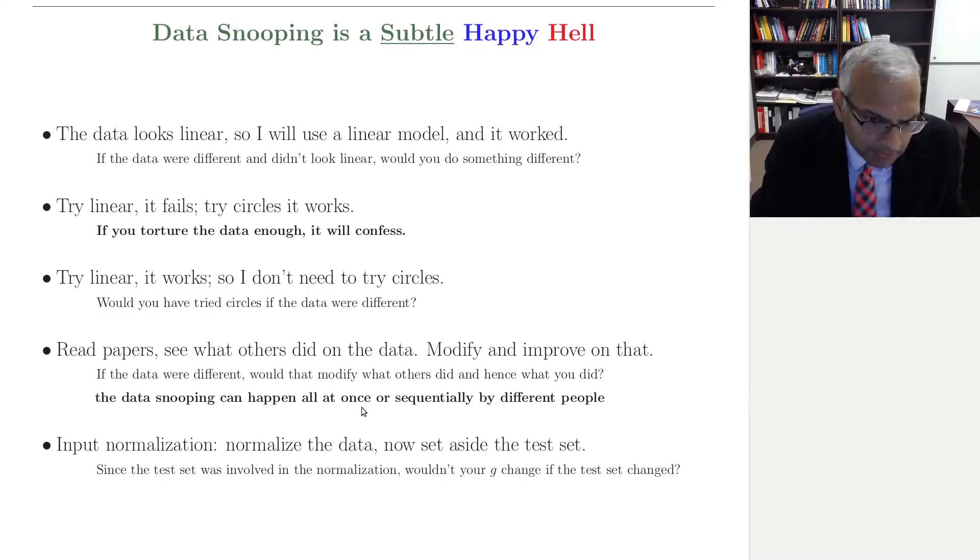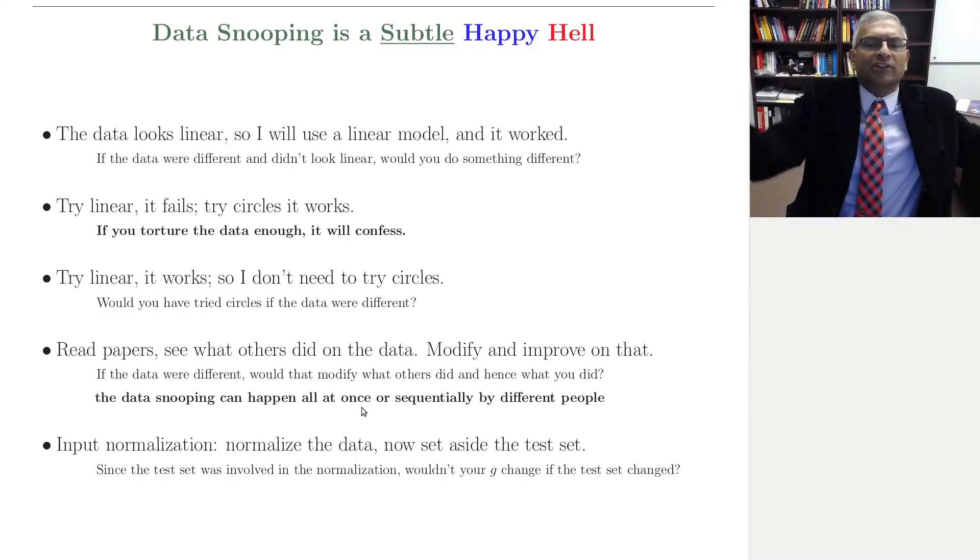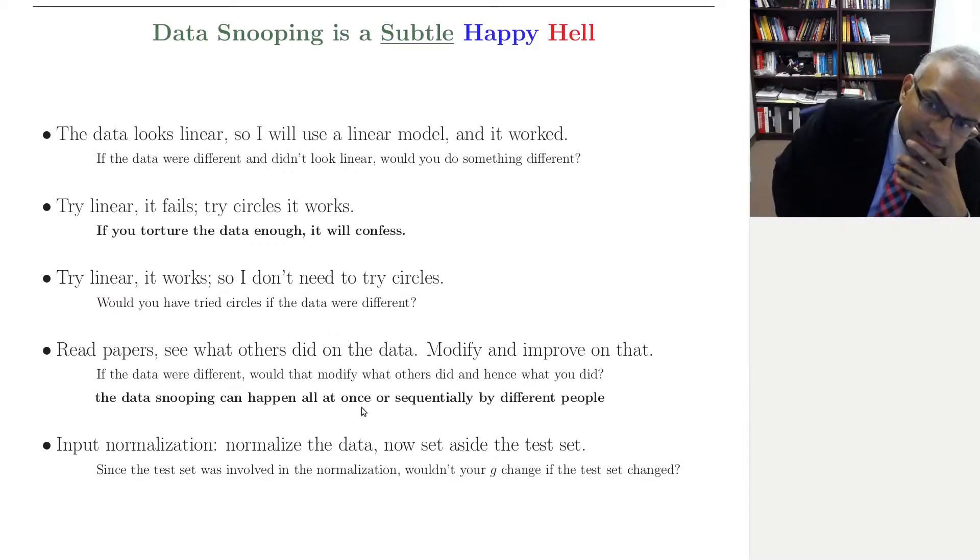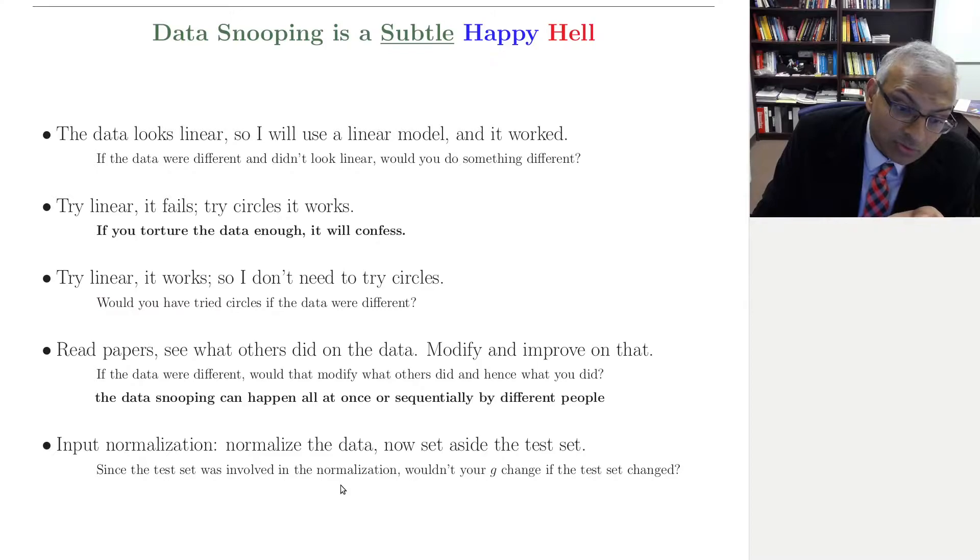And one final example, input normalization. Let me normalize all the data. Now let me set aside a test set. Now this is subtle. The test set was involved in the normalization. So if the test set changed, wouldn't your G change? Wouldn't your final hypothesis change? It would.